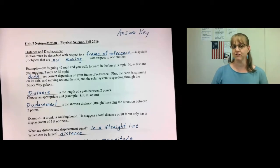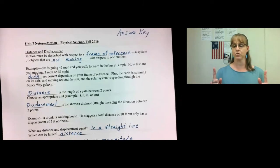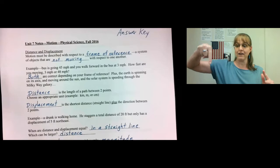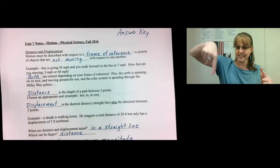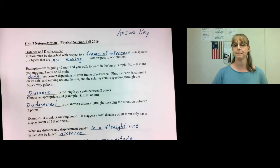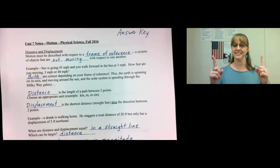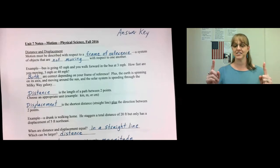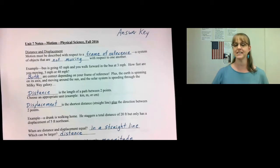So let's talk about the difference between distance and displacement. Distance is the length of a path between two points — it doesn't matter if the path curves or winds. The length of the full path, no matter how long it goes, is the distance. Displacement is how far it is from one place to another in a straight line. It is the shortest distance between two points, plus it also includes the direction that you're going.